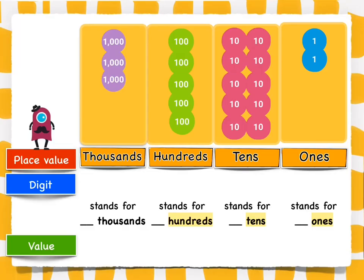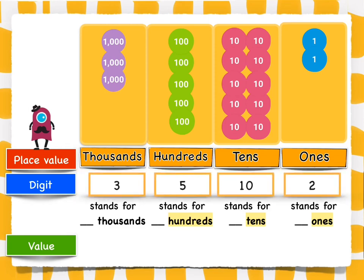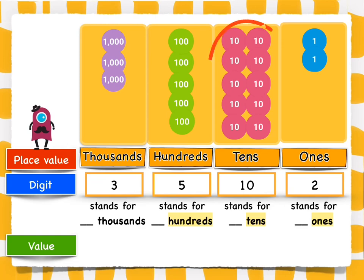Study the number disks given. How many ones, tens, hundreds, and thousands are there? I can see that there are two ones, ten tens, five hundreds, and three thousands. I spy ten tens. What do you think should we do if we have ten tens? What does ten tens make?